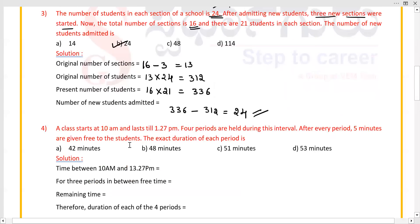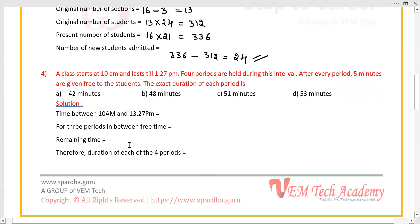Now the fourth problem: a class starts at 10 AM and lasts till 1 hour 27 PM. 4 periods are held during this interval. After every period, 5 minutes are given free to the students. Find the exact duration of each period. First find the difference between starting time and ending time: the difference is 3 hours 24 minutes.